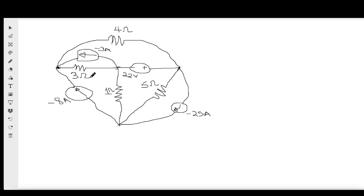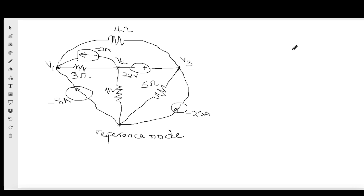Here is an example circuit with four nodes. I designate the bottom node as the reference node, then assign V1, V2, and V3 to the other three nodes. Between non-reference nodes V2 and V3 there is a voltage source. This makes it difficult to apply KCL at V2 or V3 individually, so we use super node analysis.